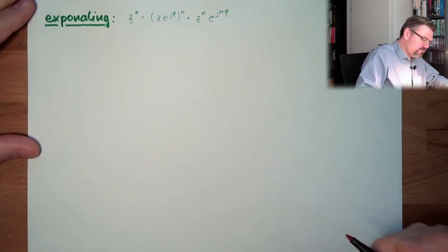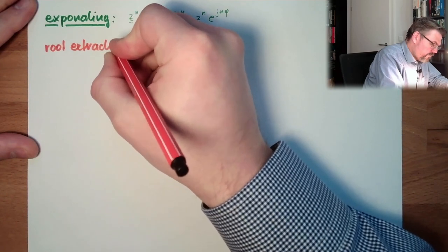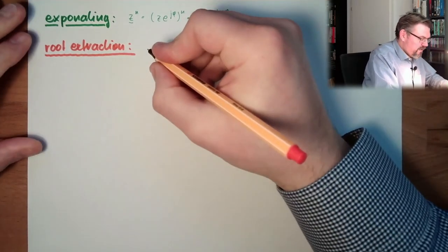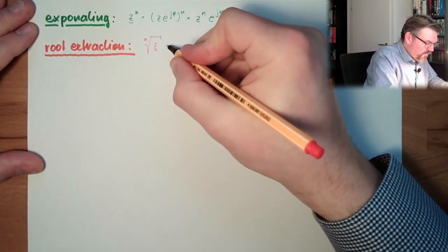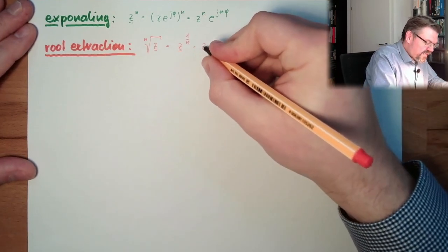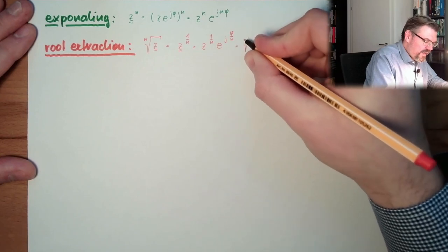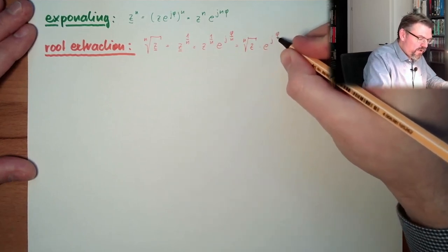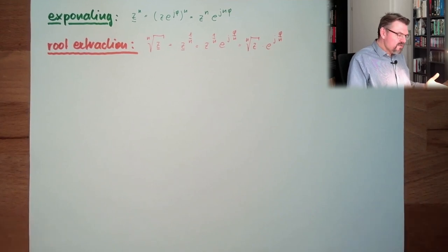Now root extraction: we want the nth root of a complex number. Since a root is the same as raising to the power of 1/n, we get the nth root of the absolute value, times e^(jφ/n). So take the nth root of the absolute value and divide the angle by n. Not that difficult either.